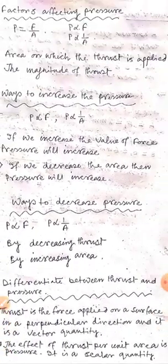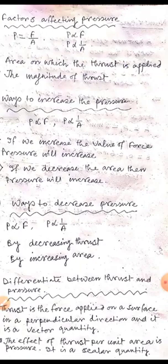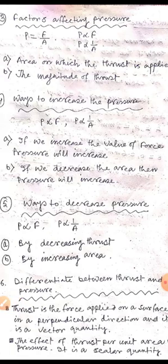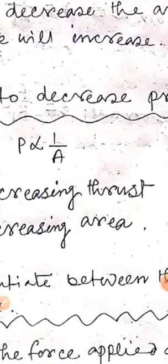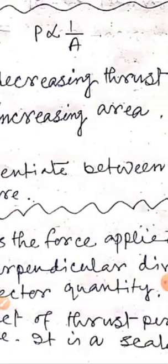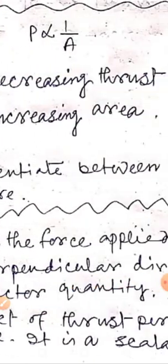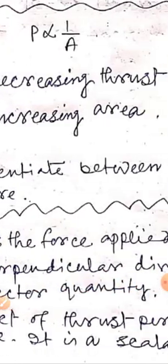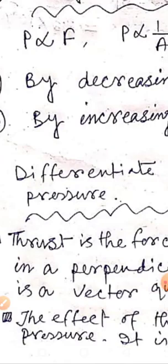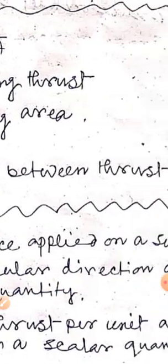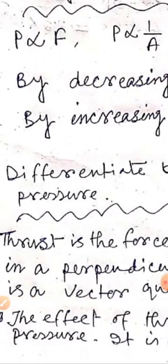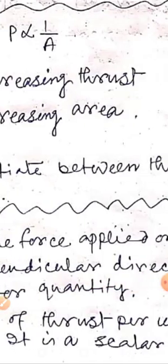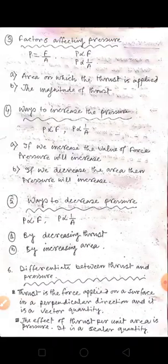Next, the difference between thrust and pressure. Thrust is the force applied on a surface in a perpendicular direction, and it is a vector quantity. Pressure is the effect of thrust per unit area, and it is a scalar quantity.